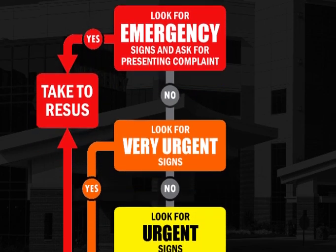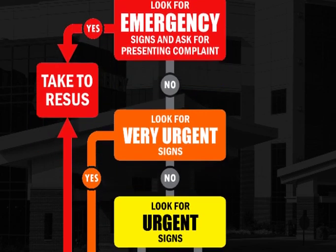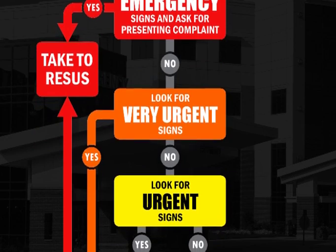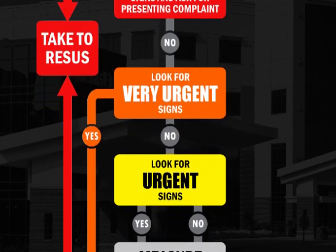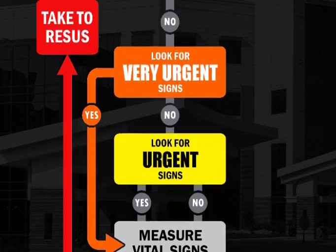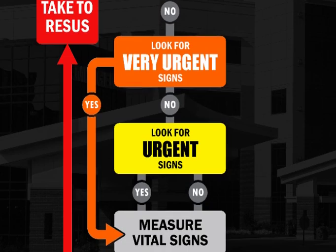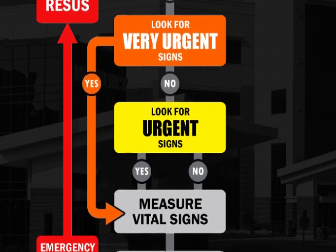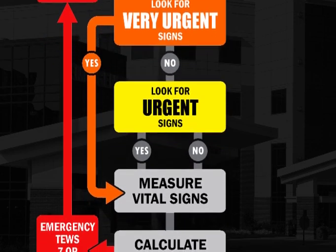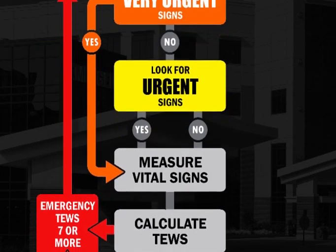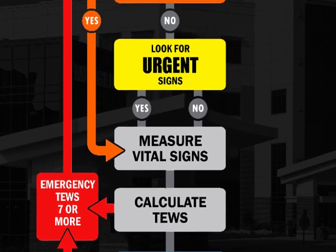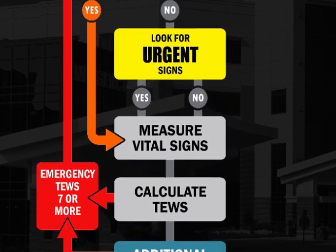If no emergency signs are found, we look for very urgent and urgent signs based on the presenting complaint. Whether we find them or not, we would in the next step measure the vital signs and calculate the TEWS. A TEWS of seven or more would indicate an emergency, and again the patient would go straight to recess.